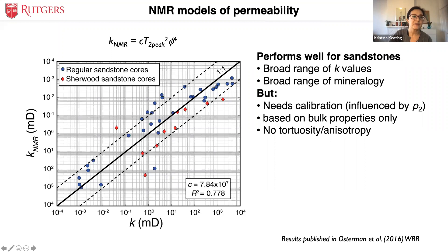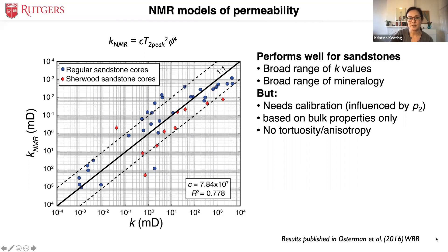Using that same set of sandstones, the permeability estimated from the Kozeny-Carman relationship compared to measured permeability performs really well for a broad range of sandstones and mineralogy, but it really needs calibration because it's strongly influenced by surface relaxivity. We also know it's only based on bulk properties with no information about tortuosity or anisotropy. Andy Binley provided all the sandstones for this sample, and these results were published by graduate student Gordon Osterman in 2016.